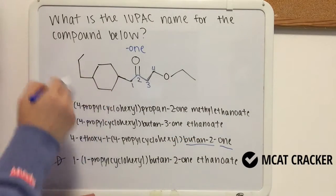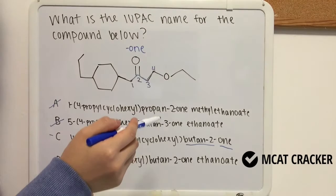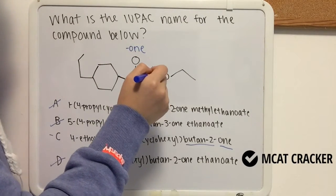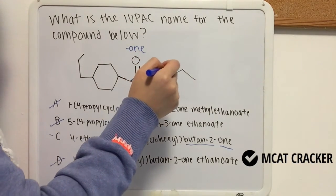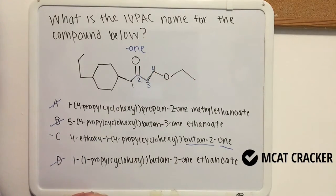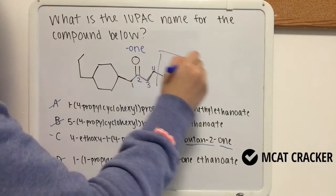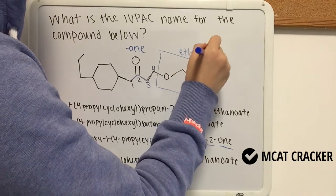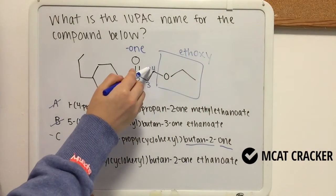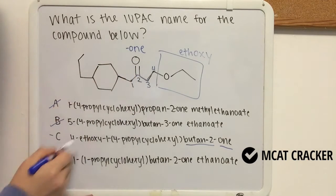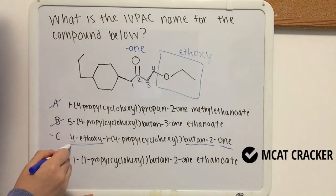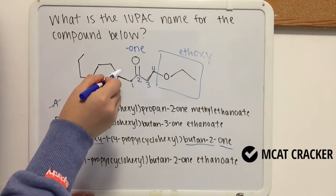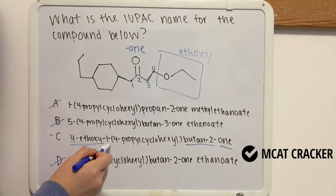Now we want to identify the substituents and give them their full names. Looking at our ether group, we have an O and two carbons. You should know that this is an ethoxy group. This ethoxy group is at position number four, which also corresponds to our answer choice.